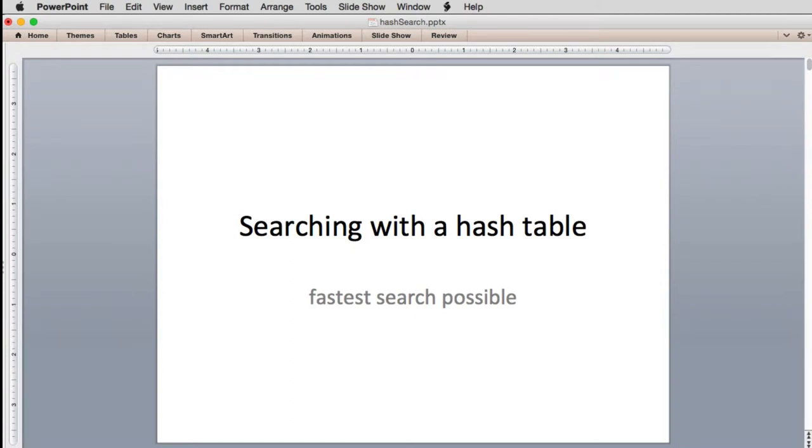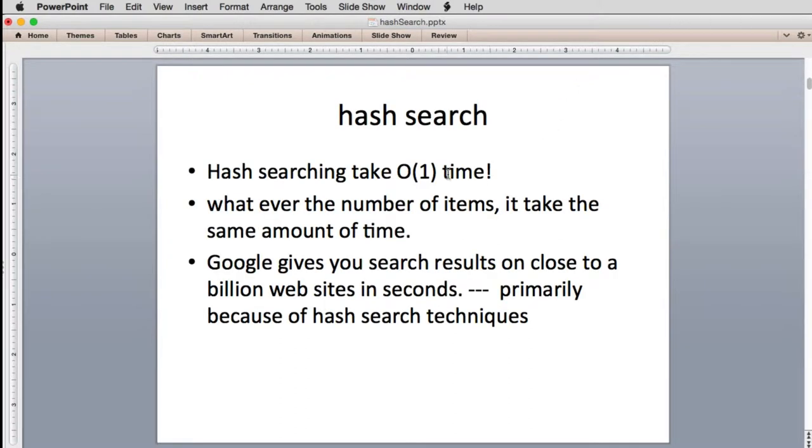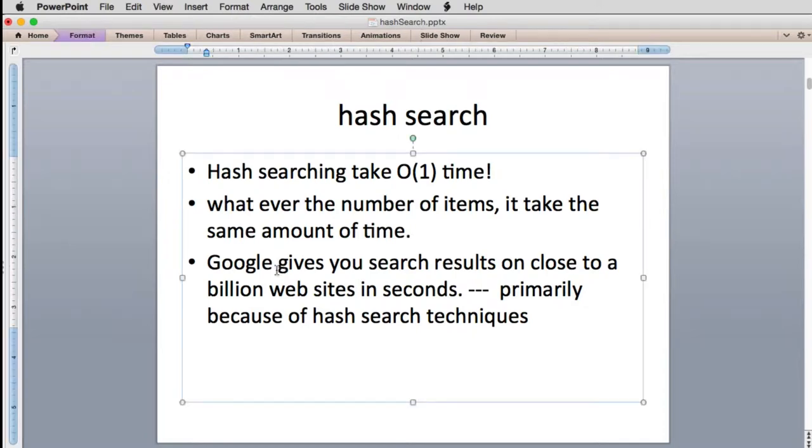Okay, now we're going to cover using hash tables. Hash tables are very fast. A hash always takes a constant amount of time because it just has to do a few operations to look up and find the item you're looking for. So no matter how many items, it takes the same amount of time. A good example is Google. When you type in a search string in Google, it always comes back in the same approximate number of seconds no matter how many websites it has to search. And right now it's searching close to a billion websites and giving those results in just a second or so.